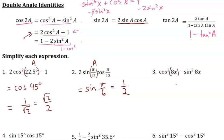For cosine squared of 8x minus sine squared of 8x, this has a variable x in it, so our expression will remain in terms of x. Cosine squared minus sine squared matches the first cosine of 2a identity, so here a equals 8x. This equals cosine of 2 times 8x, which is cosine of 16x. We're not solving for x, so we just leave it in terms of x.